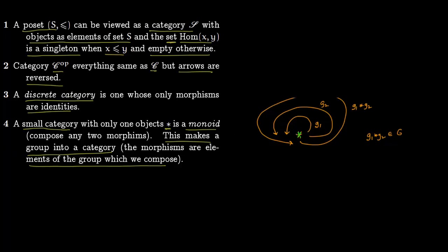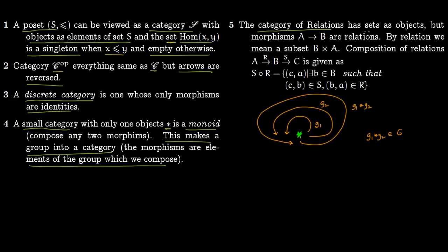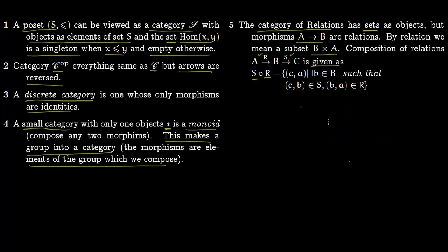Finally, the category of Relations: objects are sets, and a morphism from A to B is a relation, meaning a subset of B × A. Composition of relations: given R from A to B and S from B to C, the composite S∘R is a subset of C × A defined by: (c,a) is in S∘R if there exists some b such that (c,b) ∈ S and (b,a) ∈ R.